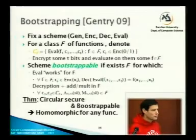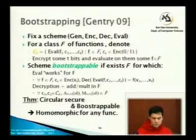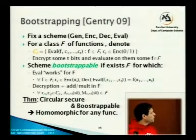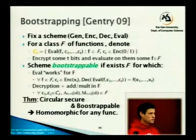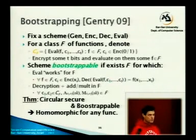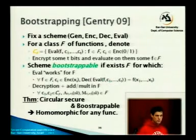C_F essentially requires ciphertexts with slightly lower noise than what you might otherwise think is possible to handle. You can think of this as an operation on F: you start from F, go to C_F, look at all those functions, and F must be closed under this transformation of looking at ciphertexts and the functions they define.